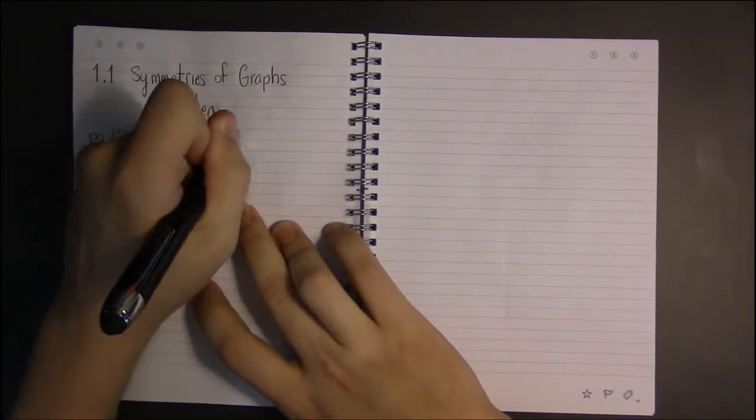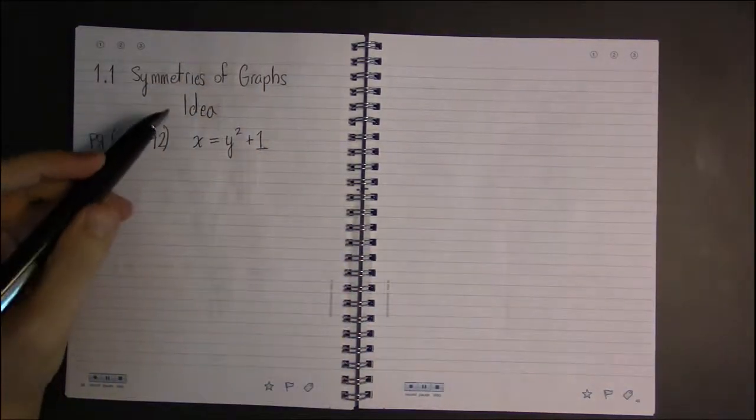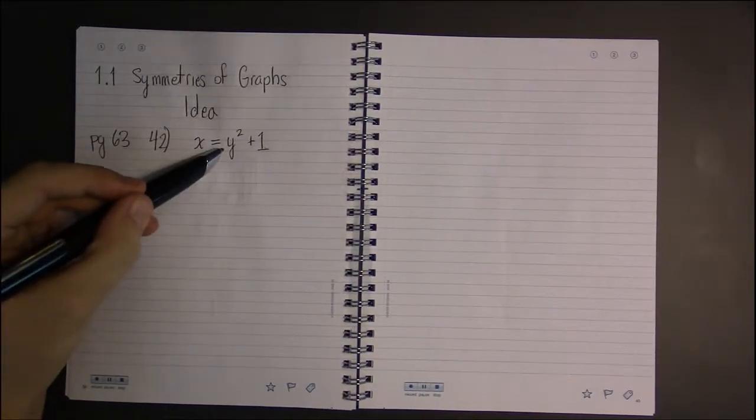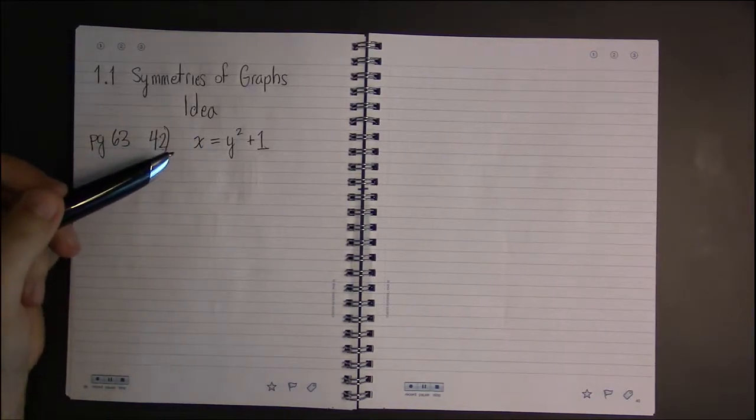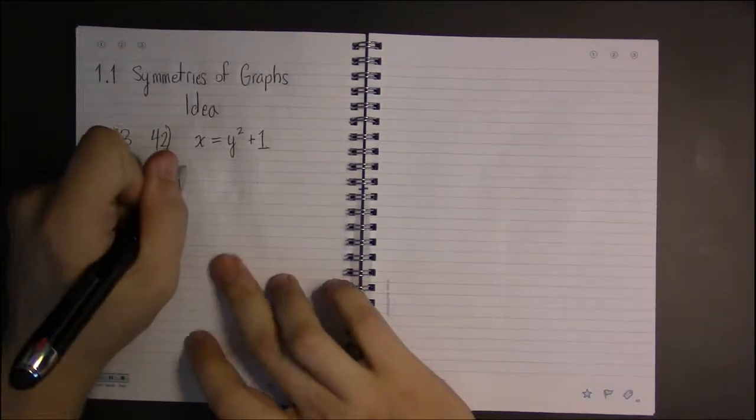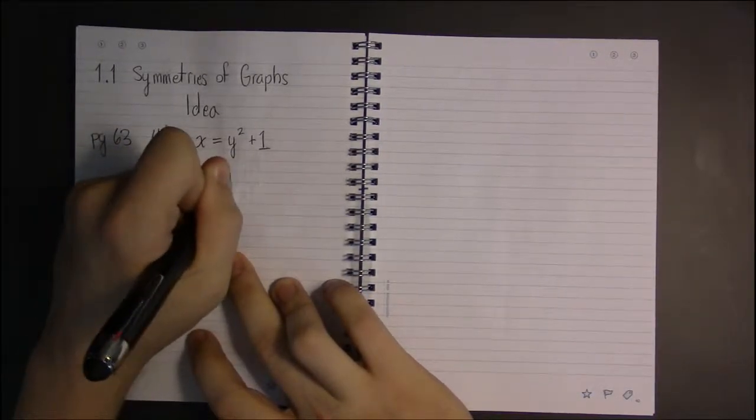There are three types of symmetries we're interested in: x-axis symmetry, y-axis symmetry, and origin symmetry. So to test for symmetry about the x-axis,